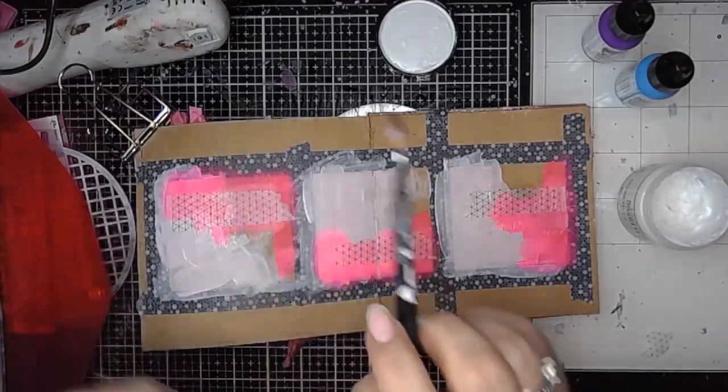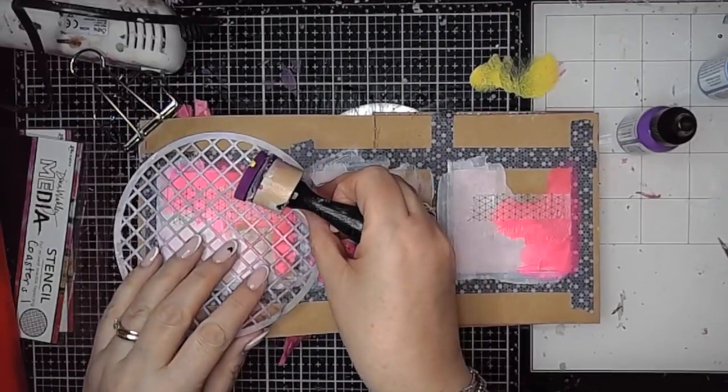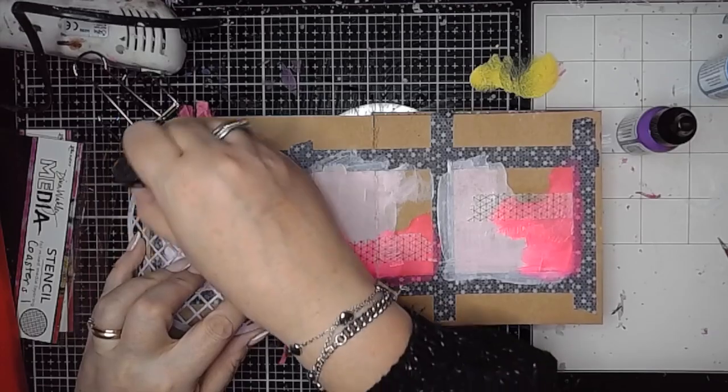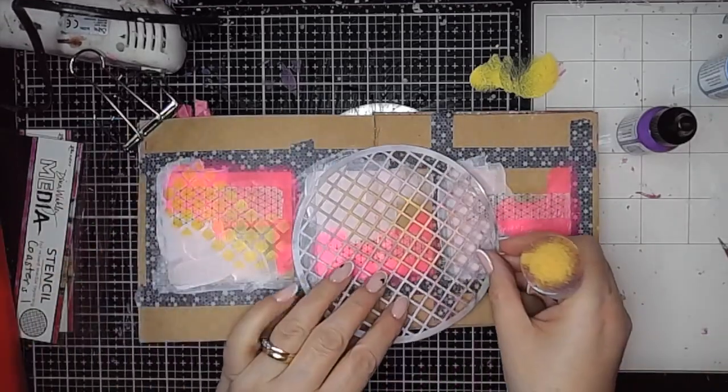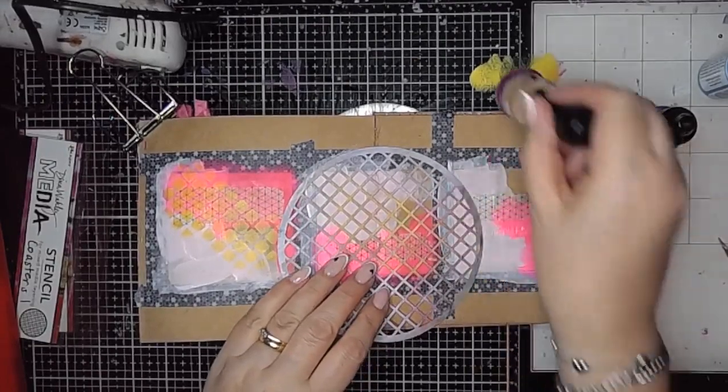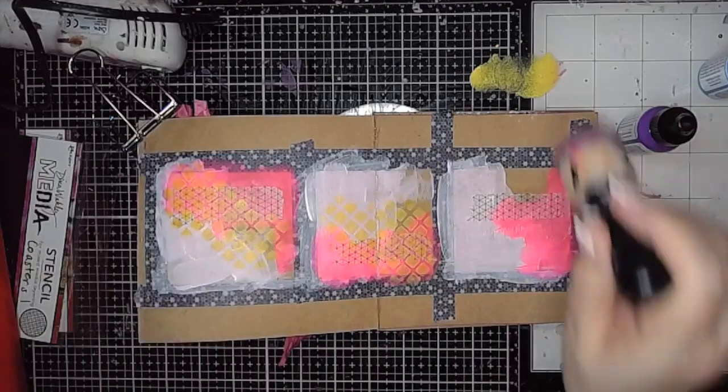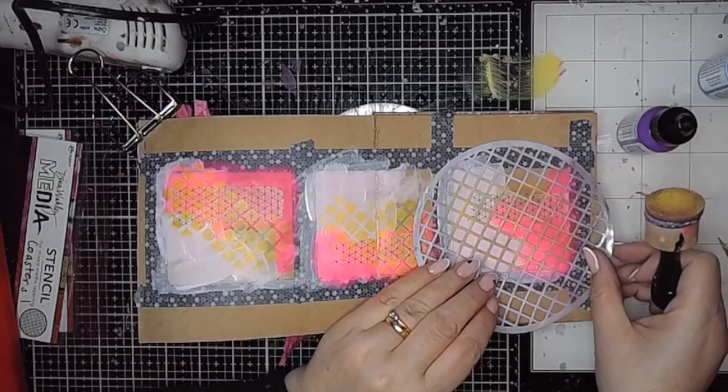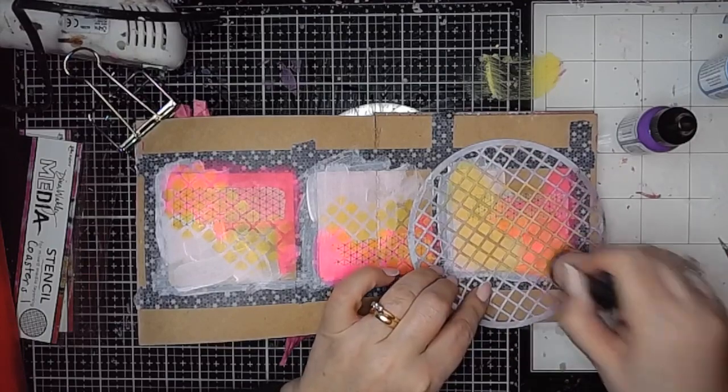I'm just trying to vary the positions of the little bits of collage paper on these grids just so that it creates a bit of variety with what's going on. Then this is one of the new stencils, one of the coaster stencils. I can't remember whether it's one or two.